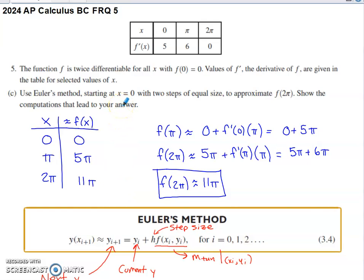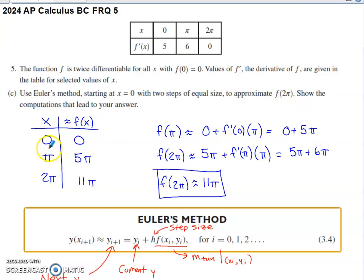Part C asks us to use Euler's method starting at x equals zero, with two steps of equal size, to approximate f of two pi, and show the computations. I typically like to structure my work in table form. Starting at x equals zero, the y-value is zero — that was indicated earlier. Going with two steps of equal size from zero to two pi, the first step goes from zero to pi, and the second from pi to two pi.